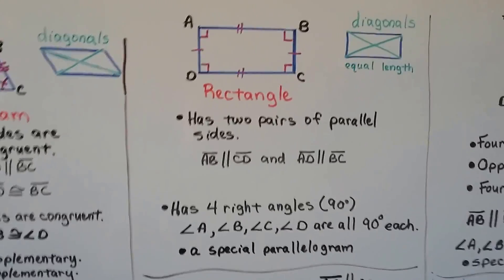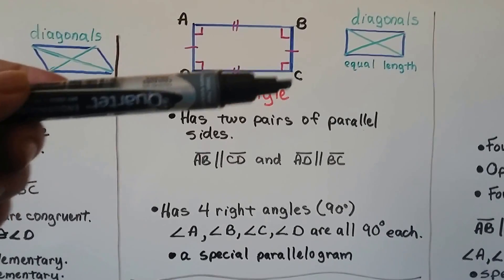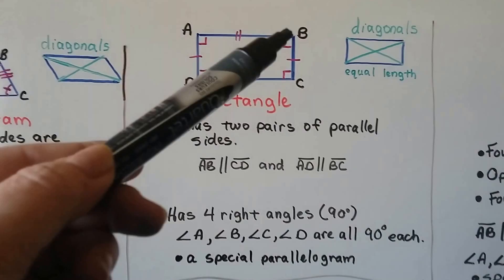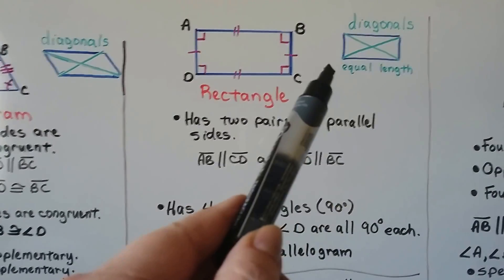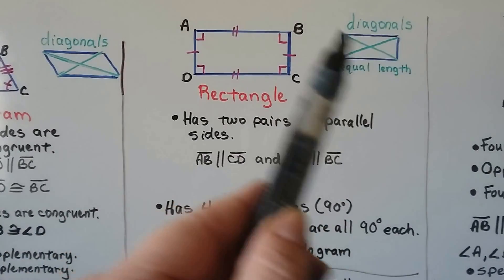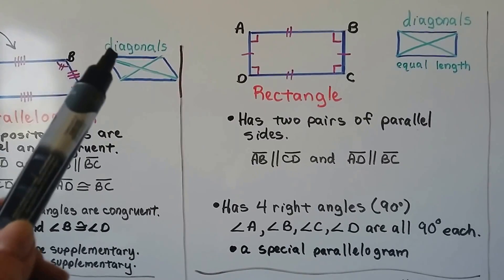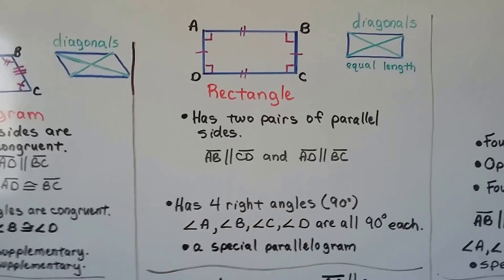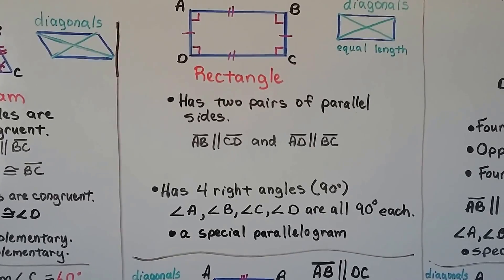Here's a rectangle. It has two pairs of parallel sides and four right angles that are each 90 degrees — see our little boxes? And it's got diagonals that are equal length. Because it has four right angles, the diagonals are the same length as each other, whereas in the parallelogram without four right angles, one diagonal was longer than the other. But in a rectangle, they're the same length. It's also considered a special parallelogram.